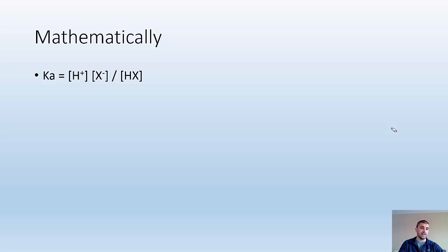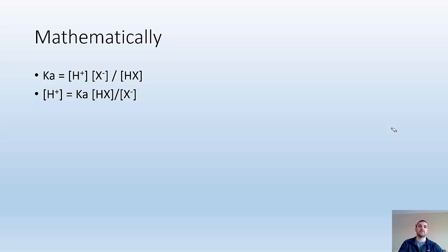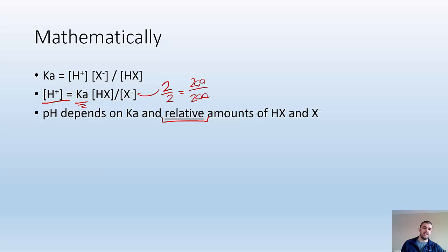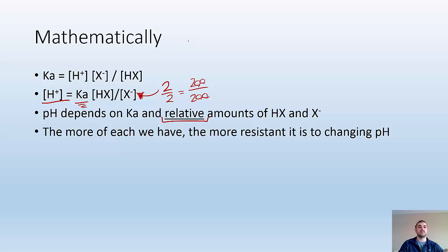Mathematically, buffer capacity: Ka equals H+ times the anion over the acid. Rearranging to solve for H+, I get H+ equals Ka times Hx over the anion. pH is going to depend on Ka and the relative amounts of Hx and x minus. Because 2 over 2 versus 200 over 200 still gives me the same H+ concentration when I plug it in. So pH depends on Ka and relative amounts. But the more of each we have, the more resistant it is to changing pH — these are equivalent for giving us our pH, but they have different capacities.